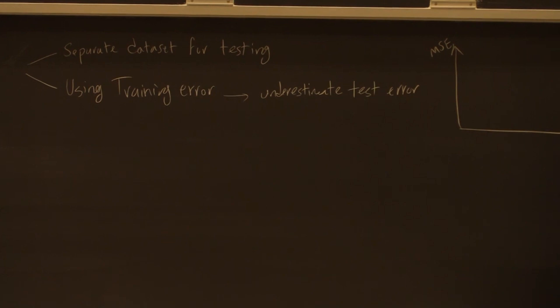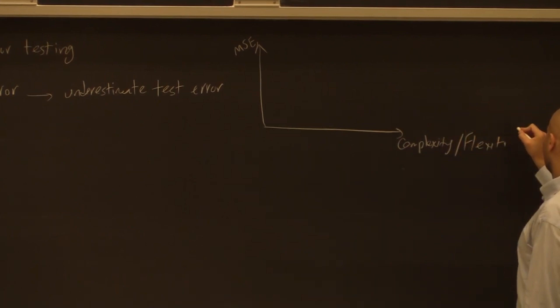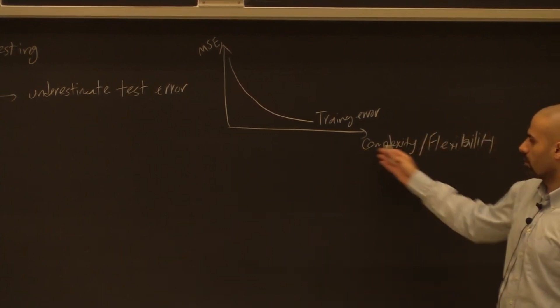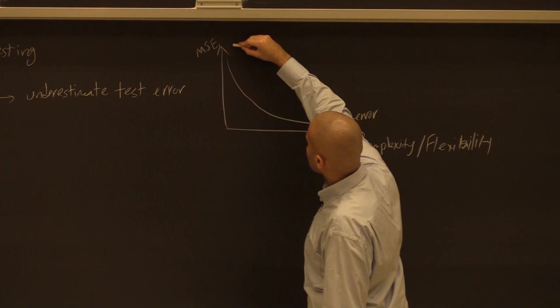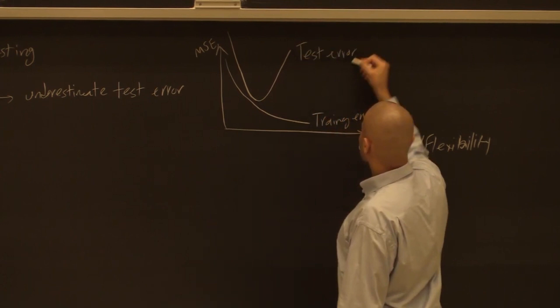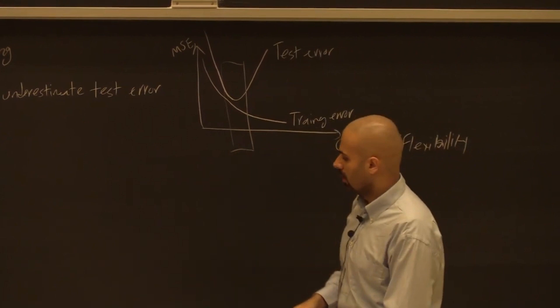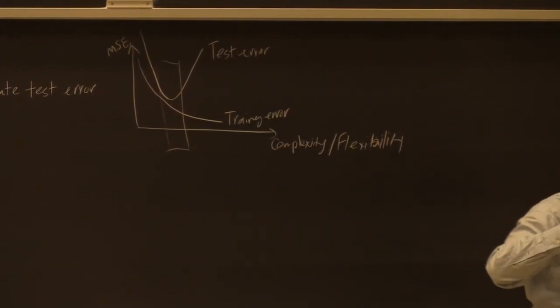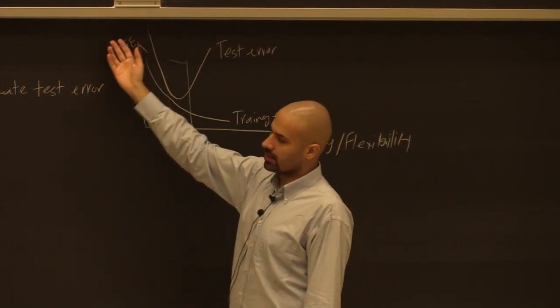Consider plots with MSE on the y-axis and model complexity or flexibility on the x-axis. Training error usually decreases the more complex a model we use. But test error has a U-shaped behavior: it decreases up to some level — the suitable hyperparameter value — and then increases because of increasing variance. To the right we see increasing variance; to the left, increasing bias. What we want is a bias-variance trade-off. That's why using training error as a proxy for test error doesn't work.